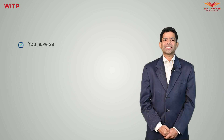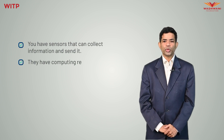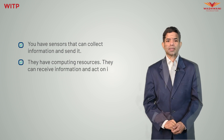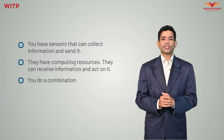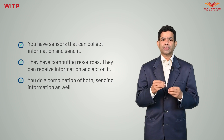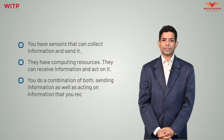IoT is a network of things or devices that can do one of the following three things. Number one, a sensor can collect information and send it. Number two, computing resources can receive information and act on it. Number three, a combination of both — sending information as well as acting on information that you receive.